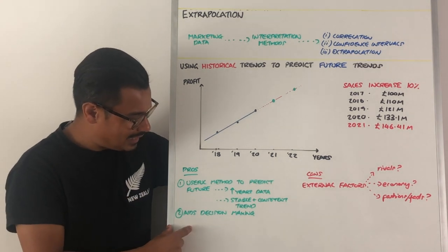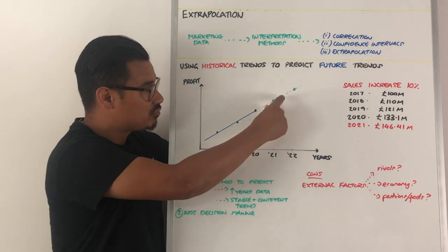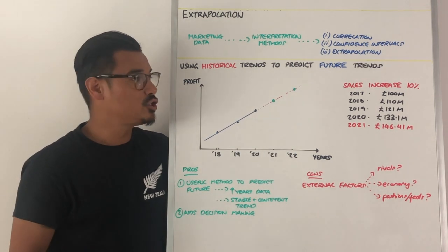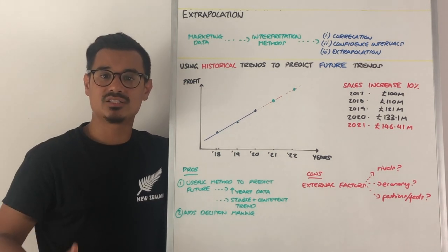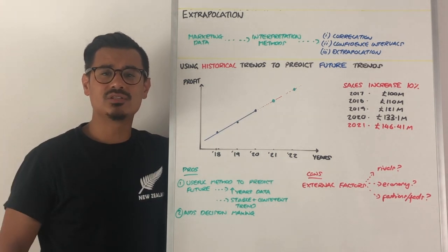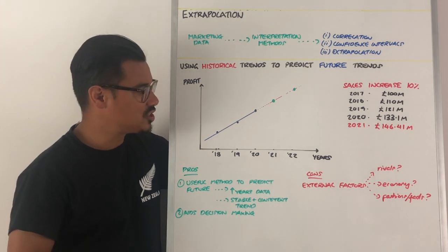It clearly aids decision making, so you can predict what you may need to do in the future. If your sales are increasing by 10%, then your production may need to increase by 10%. It can help give other departments ideas, so you can use it to aid your decision making.